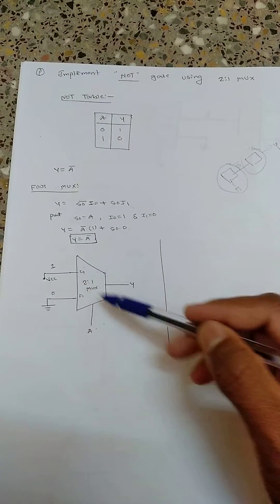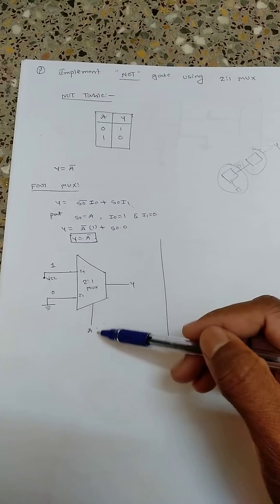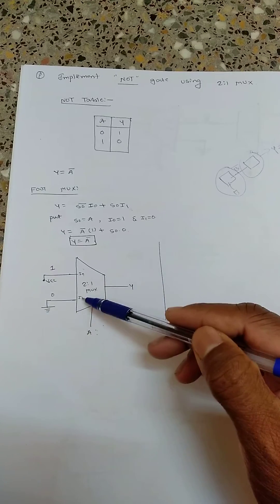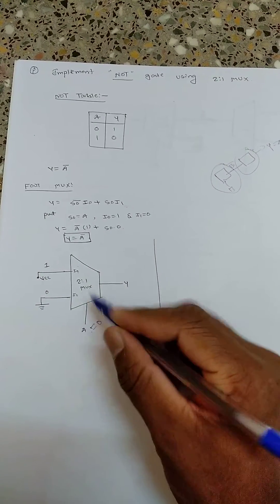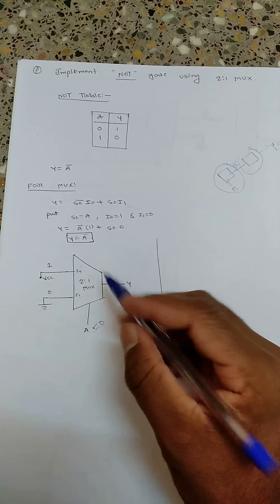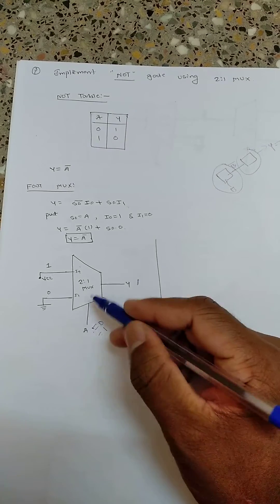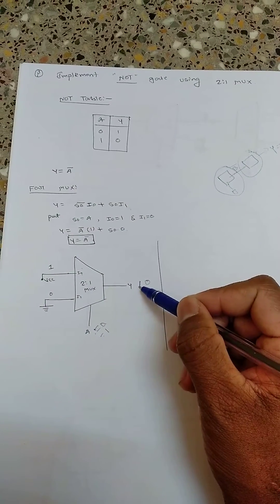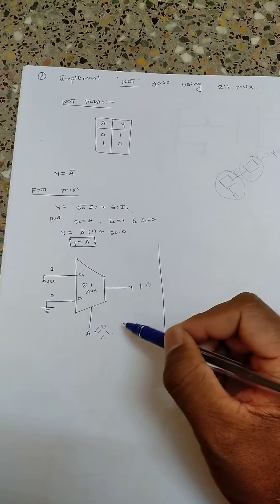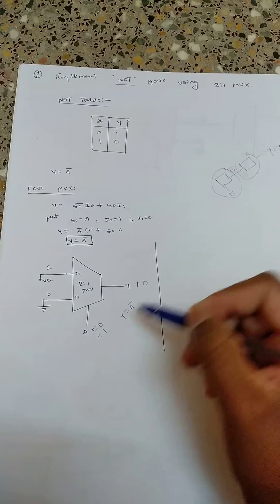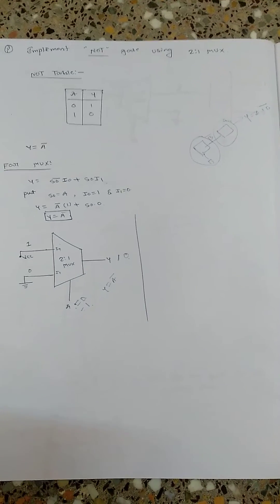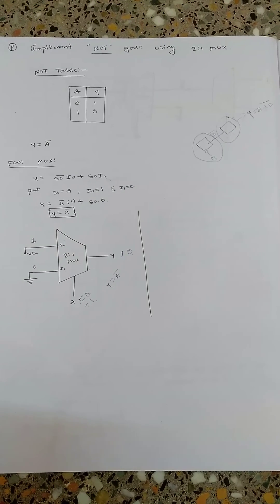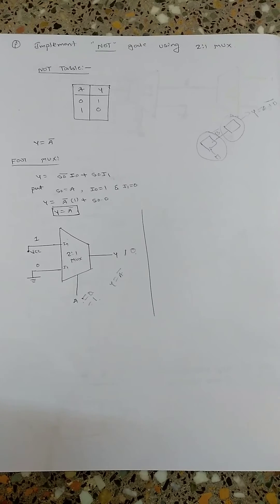Now, how do I draw this in the 2-to-1 MUX? Whenever A equals 0, it selects I-naught, and whenever A equals 1, it selects I1. So I connect I-naught to 1 and I1 to 0. Whenever A is 0, it selects I-naught which is connected to 1, so the output is 1. Whenever A is 1, it selects I1 which is connected to 0, so the output is 0. This means y equals A-bar — the output is the complement of the input, which is our NOT gate. With this simple substitution we can use the 2-to-1 MUX to implement a NOT gate.